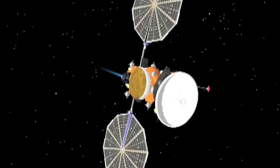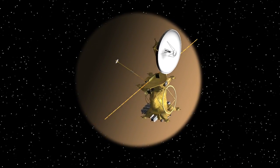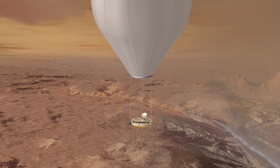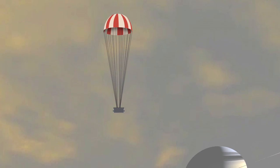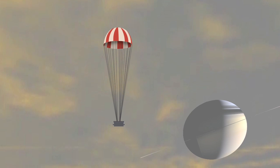The Titan Saturn System mission is a three-in-one mission with an orbiter for Titan, a balloon that will float through Titan's atmosphere, and a lander that will splash down on one of the northern lakes of Titan.